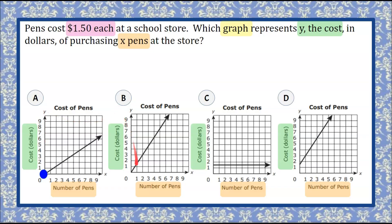Let's look at graph B. Plotting the point (0, 0), the line does start at the origin. Zero pens purchased, zero dollars spent. So it could be graph B.